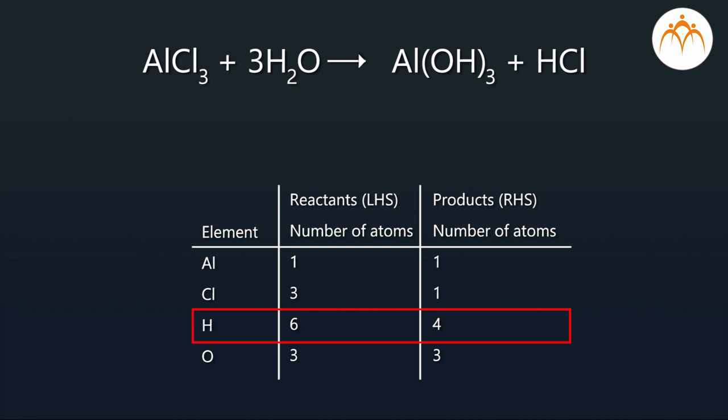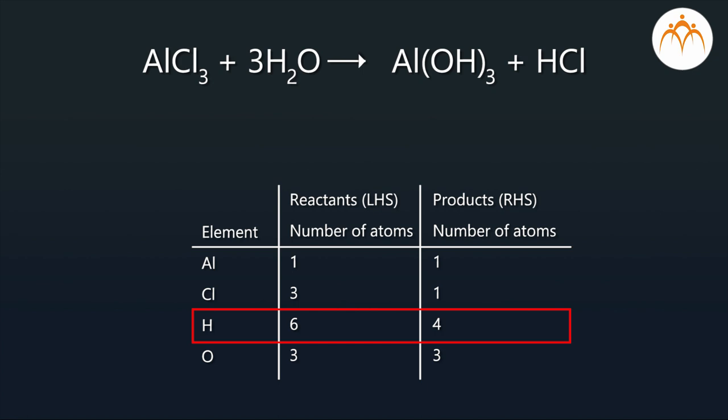So to balance the equation, we need to add two more hydrogen atoms to the product side. So we shall multiply the HCl compound by three, giving a reaction AlCl3 plus 3H2O gives Al(OH)3 plus 3HCl.